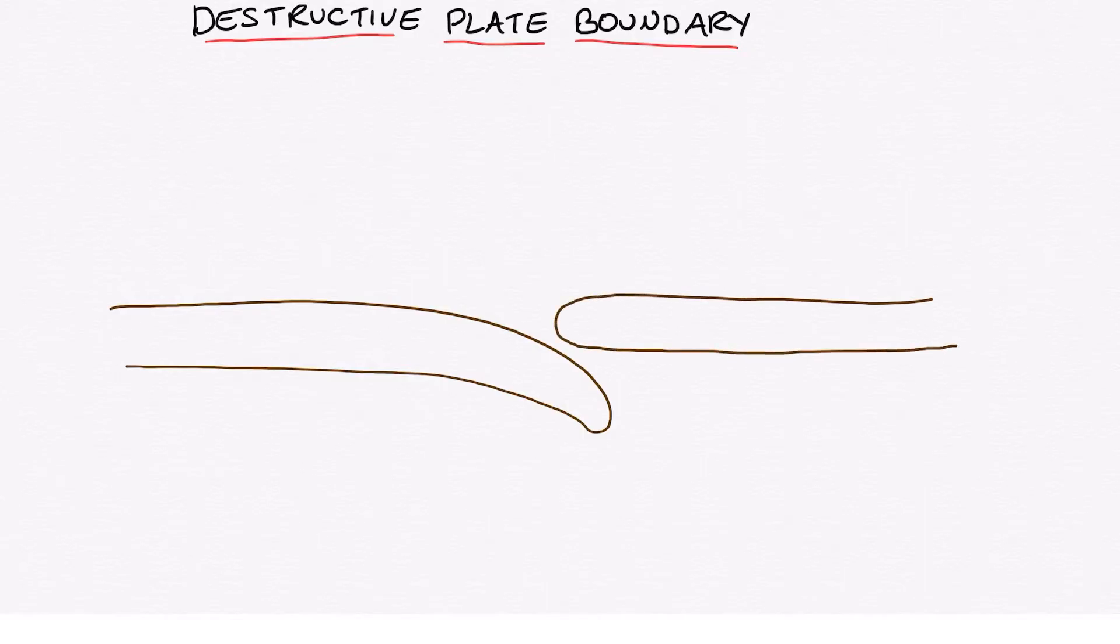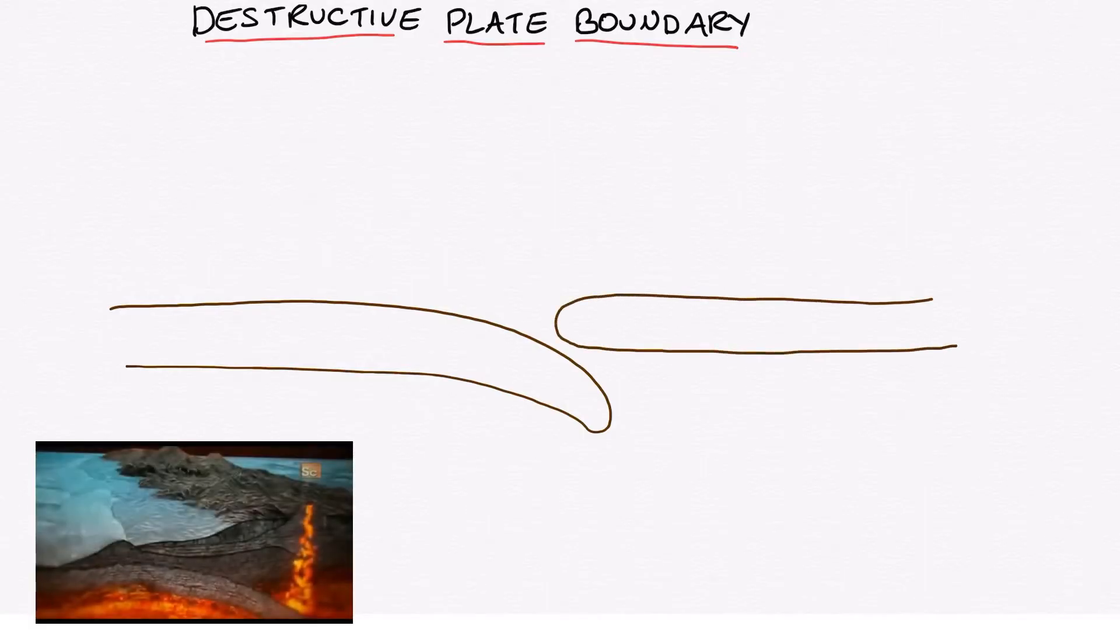Now in a destructive plate boundary this is a convergent plate boundary. What this means is that the convection currents move together, they move towards each other. This movement generates friction between the convection currents and the plates and drags the plates towards each other as well.